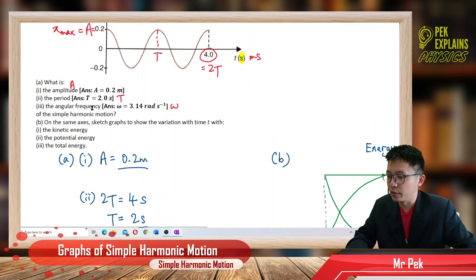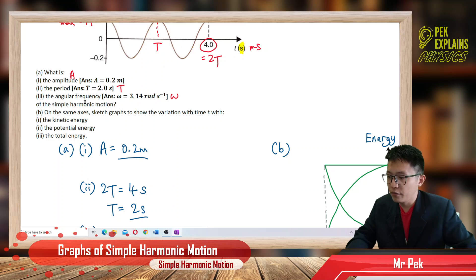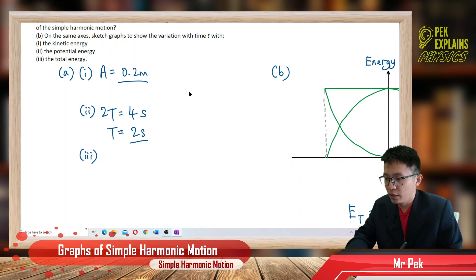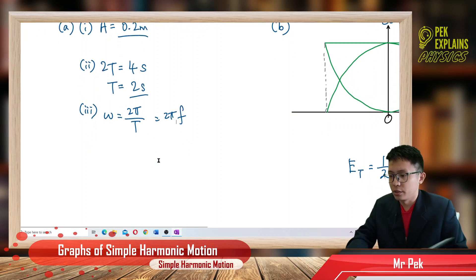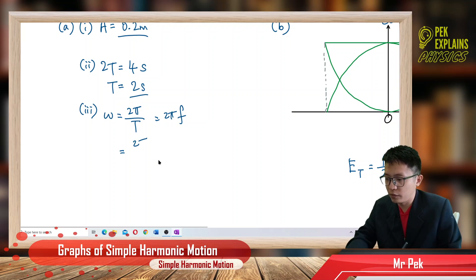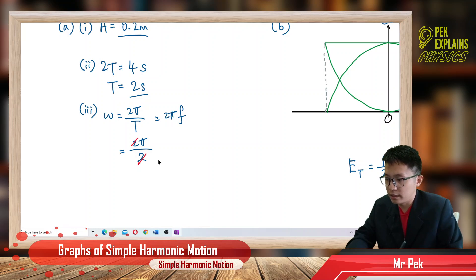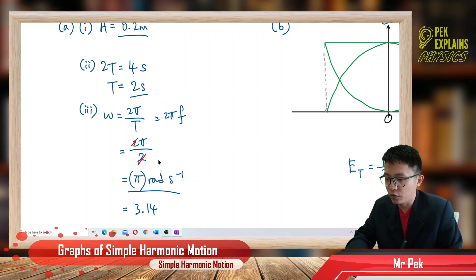For the angular frequency, omega, just use the formula. We already have the period, so omega equals 2π over the period: 2π divided by 2 seconds. The answer is π radians per second, or 3.14 radians per second.